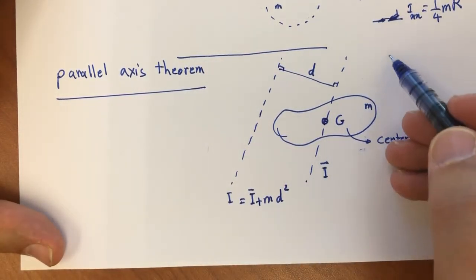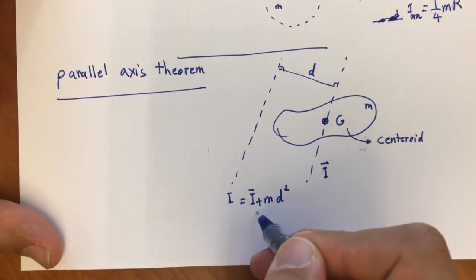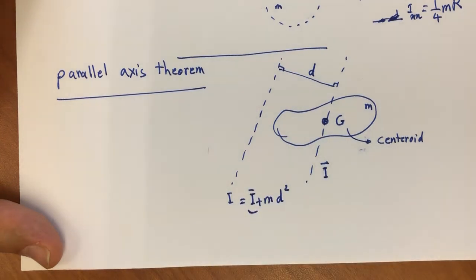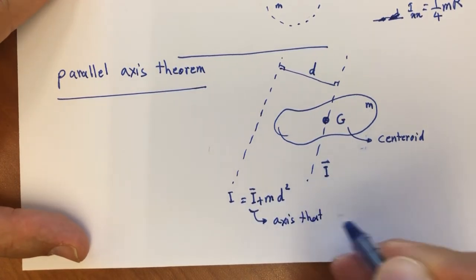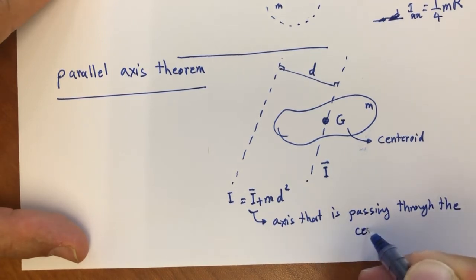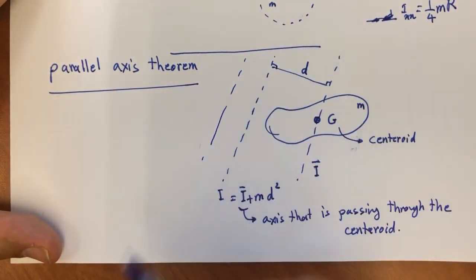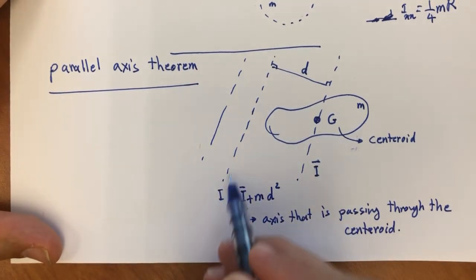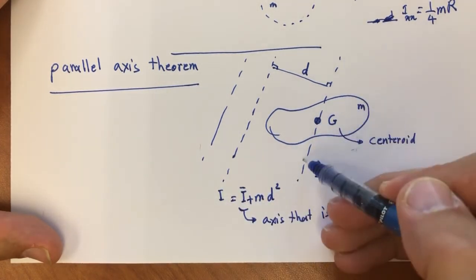If you want the mass moment of inertia about yet another parallel axis, it's I-bar plus m times the new distance squared. A critical point: the I-bar on the right side must be the moment of inertia about the axis passing through the centroid. You cannot apply this theorem between two arbitrary axes — the reference axis must pass through the centroid, otherwise the equation is absolutely wrong.